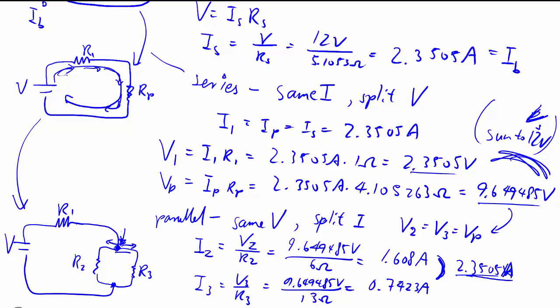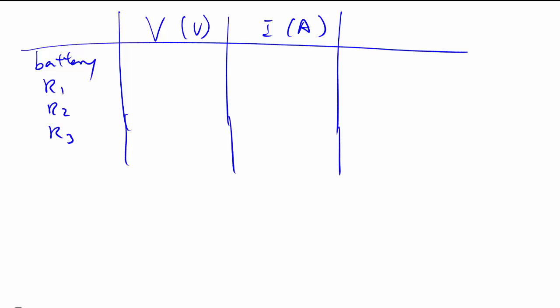Let's summarize that in the table before moving on. So we have the battery R1, R2, R3. If you look back, you'll find all these numbers.